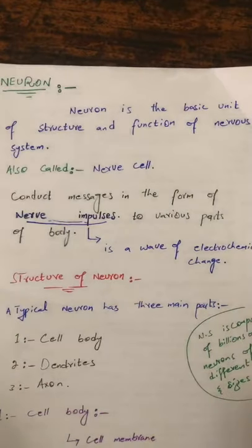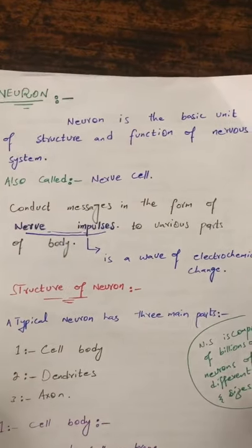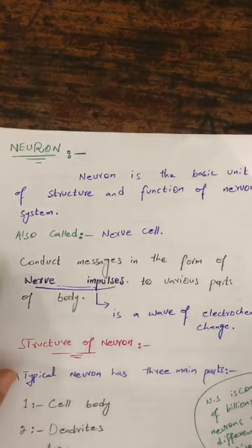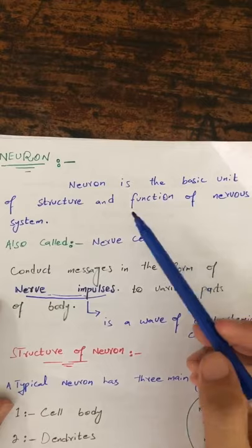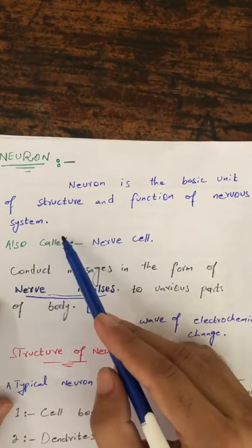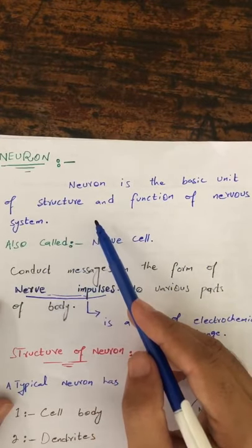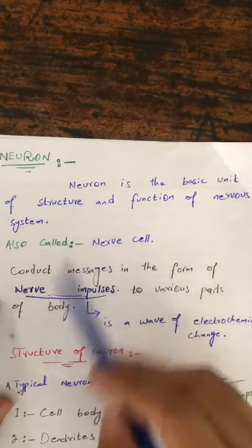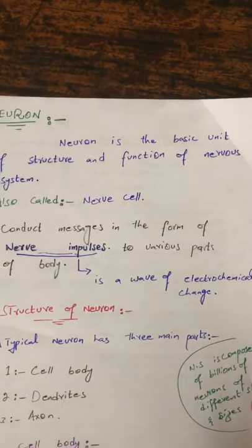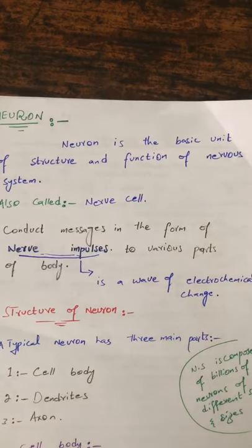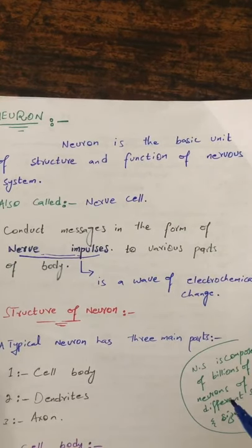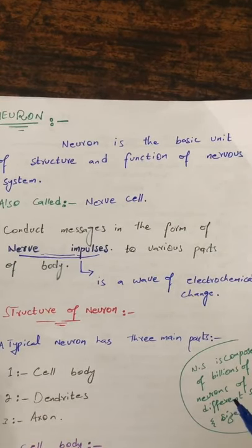Bismillahirrahmanirrahim. Assalamualaikum. Today's topic is about the Neuron. Neuron is basically the basic unit of structure and function of the nervous system. Neuron is also called nerve cells. Our nervous system is made up of billions of neurons and nerve cells of different sizes and different shapes.